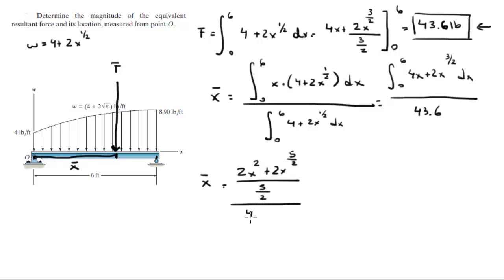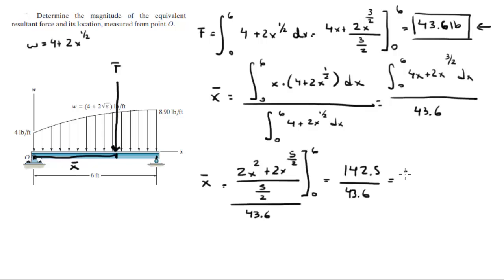All over 43.6, evaluated from 0 to 6. When you plug in 0 everything becomes 0, so you just plug in 6 for the variables and you get that the top is 142.5 and the bottom is 43.6, which makes this whole thing 3.27 feet.